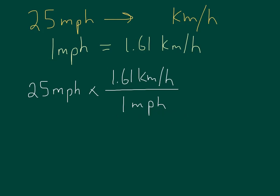And we've got a miles per hour on the top and a miles per hour on the bottom. And what's going to happen is, mathematically, we can cancel those off. So the miles per hour on the top cancels with the miles per hour on the bottom.